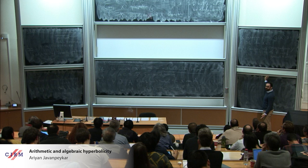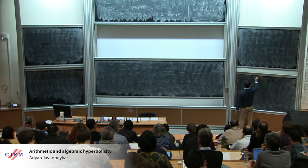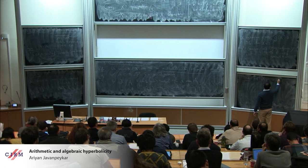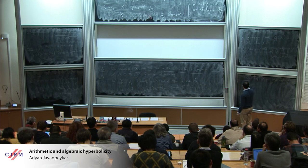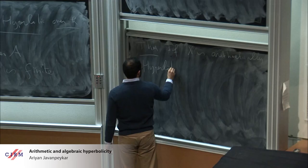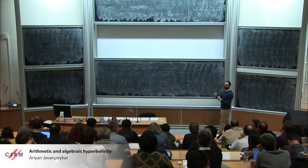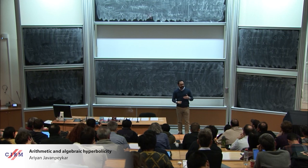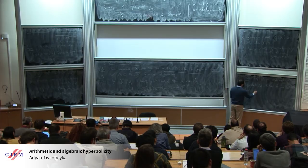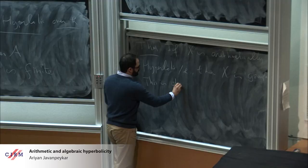Arithmetically hyperbolic varieties are always groupless. This can be proven using the potential density of rational points on non-abelian varieties over finitely generated fields of characteristic zero, essentially due to Hassett-Tschinkel.